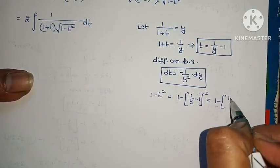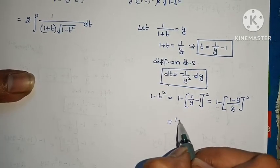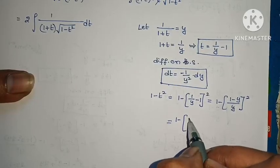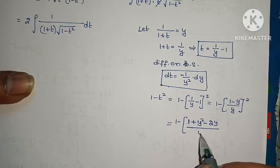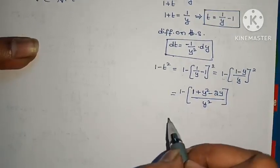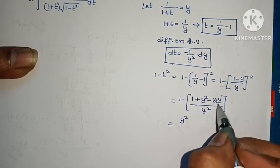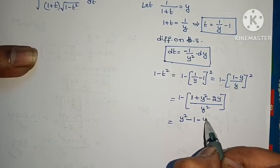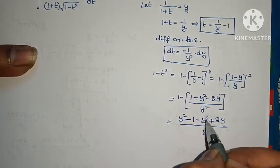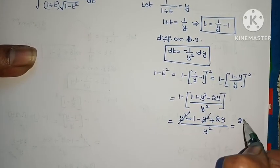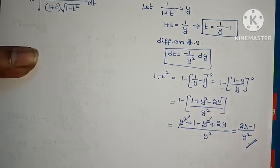Taking LCM, this gives 1 minus (y minus 1 by y) whole squared. Expanding using (a minus b) squared equals a squared plus b squared minus 2ab divided by y squared, and simplifying, we get 2y minus 1 by y squared.